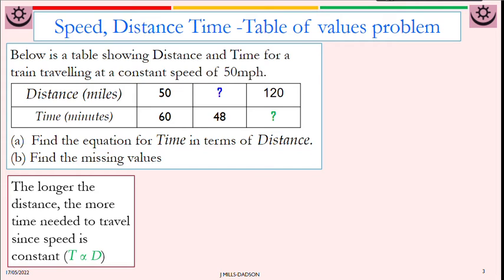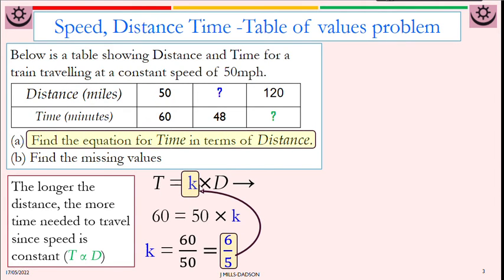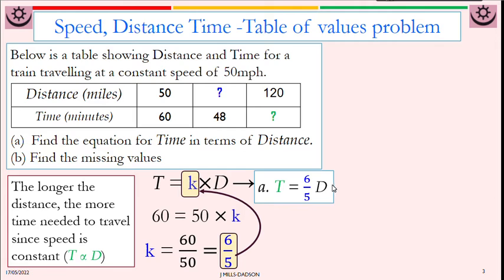So you're going to use the direct proportion rule. You start with direct proportion and always use the initial value. 50 miles per hour means every hour you travel 50 miles. That is why one hour is 60 minutes. So we start the same thing. Distance is 50, time is 60. Work out for K divided by 50. So our actual formula in an explicit form will be T equals 6 over 5 times D. Having known this formula, find the missing values for this one.